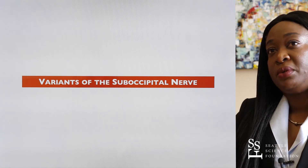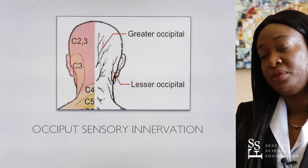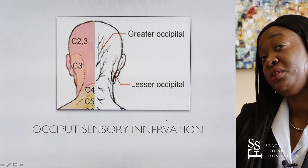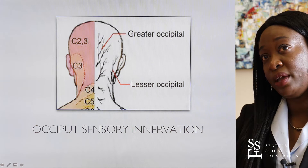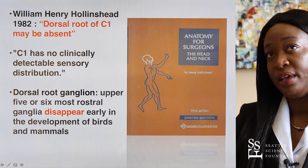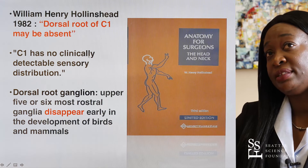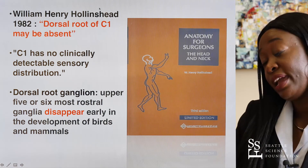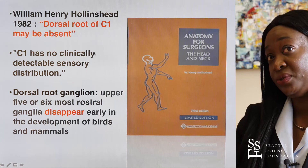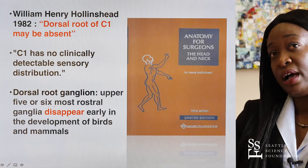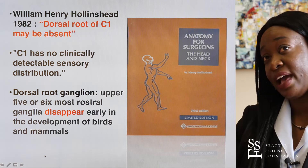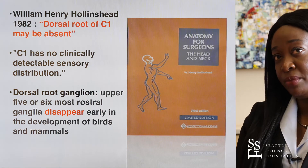Regarding variants of the suboccipital nerve, throughout textbooks and literature it has been perpetuated that there is no C1 dermatome — only C2 and C3 dermatomes from the greater and lesser occipital nerves. Anatomists like William Henry Holland in 1982 noted in textbooks that the dorsal root of the C1 nerve can be absent, and some physicians agree there is no clinically detectable sensory region for C1. Additionally, embryology studies have shown that the dorsal roots of the upper five to six most rostral ganglia actually disappear in early development in some birds and mammals.